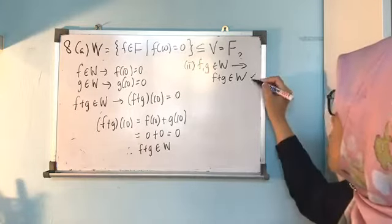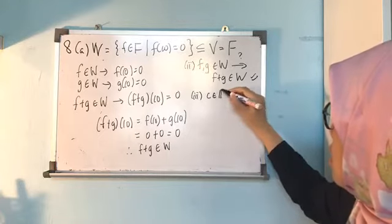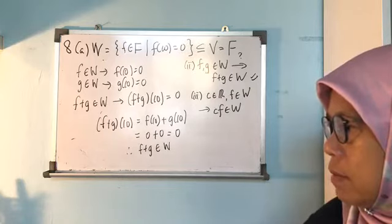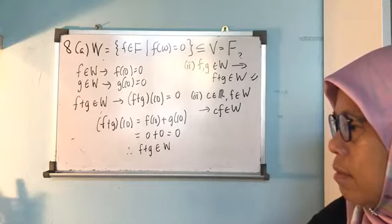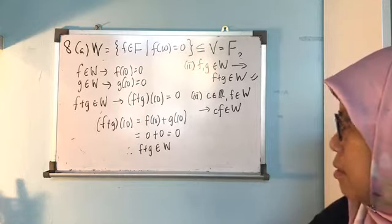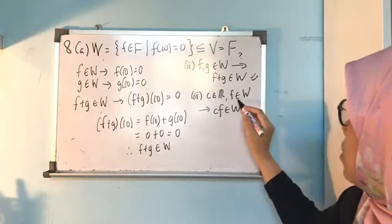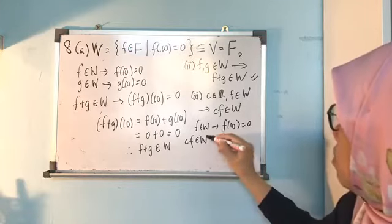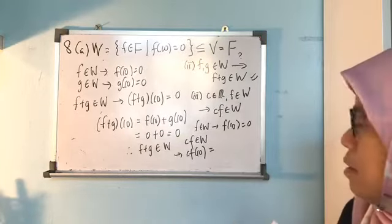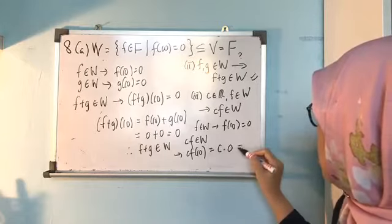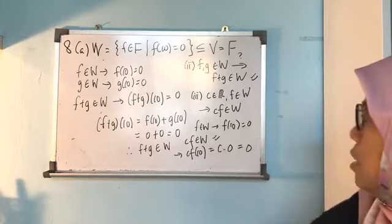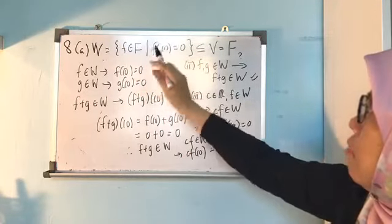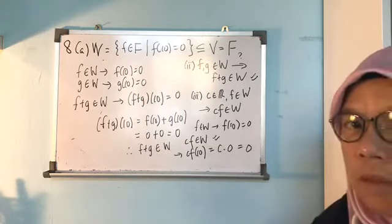The third condition is: for c in R and f in W, show cf is in W. Since f is in W, f(10) = 0. You want to show cf is in W, meaning (cf)(10) = c · f(10) = c · 0 = 0. So cf is in W. Whatever you want to show is in W, you apply the condition f(10) = 0. This is what somebody asked about question number 8.